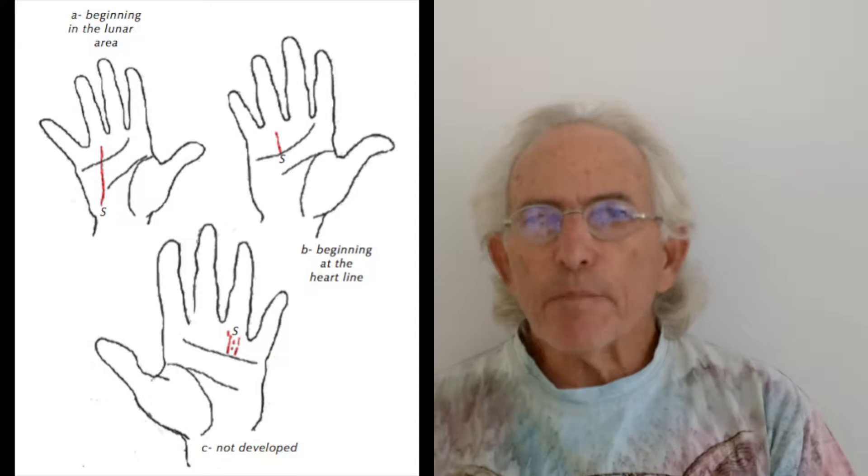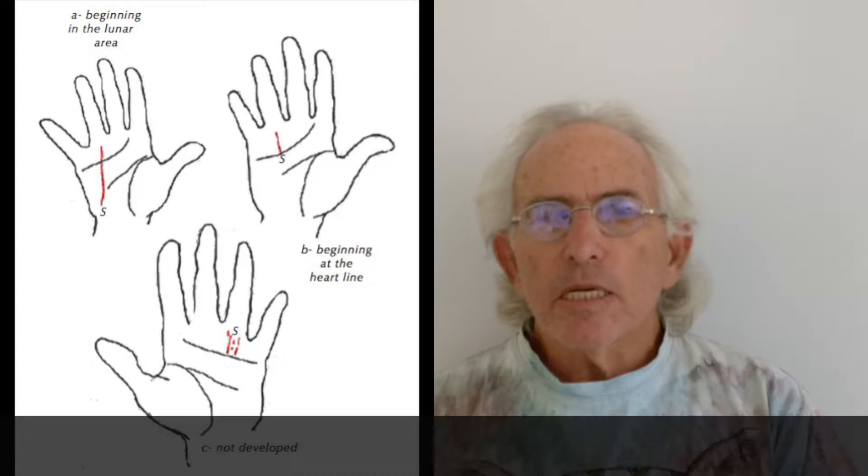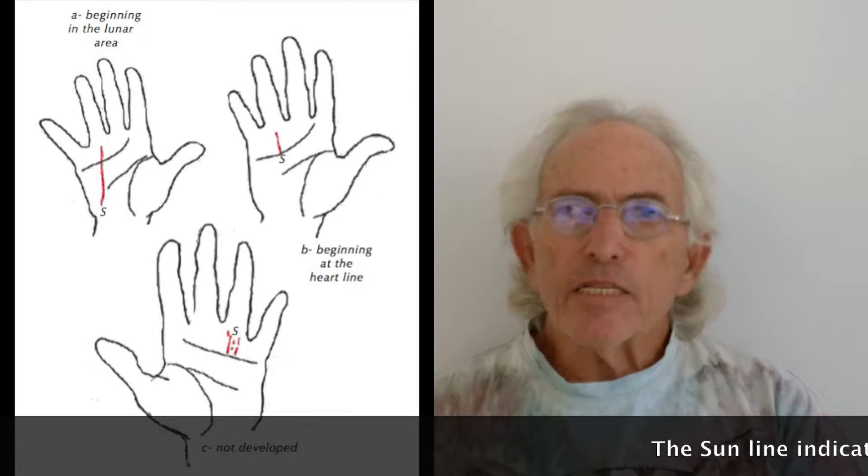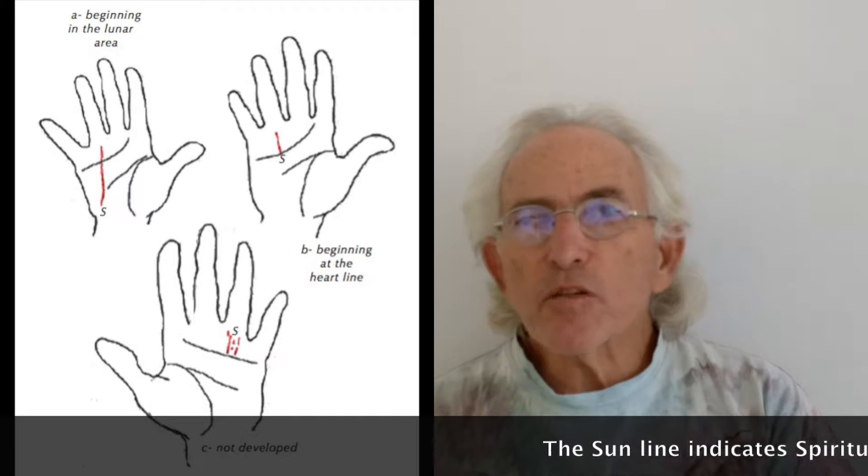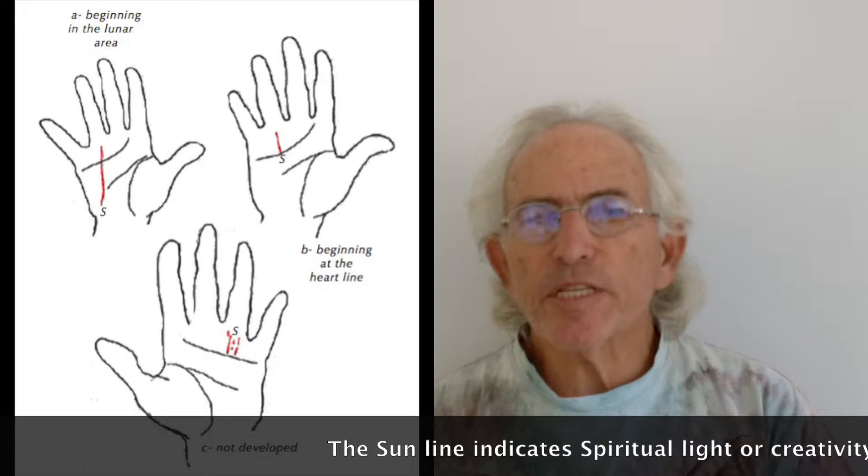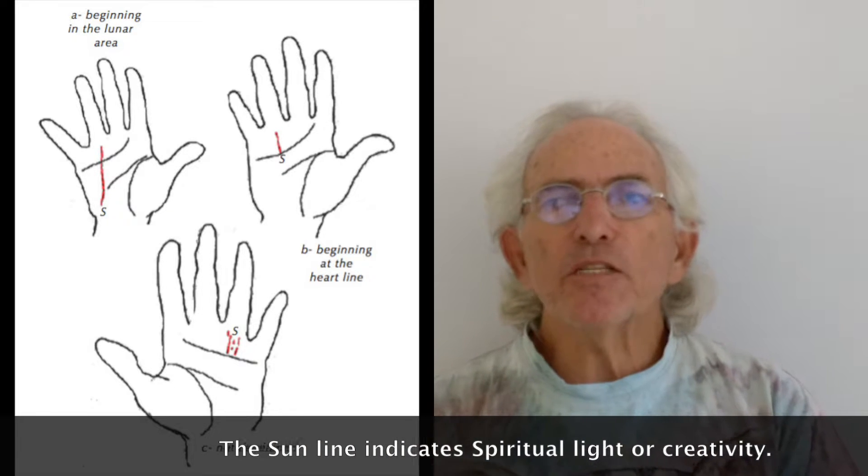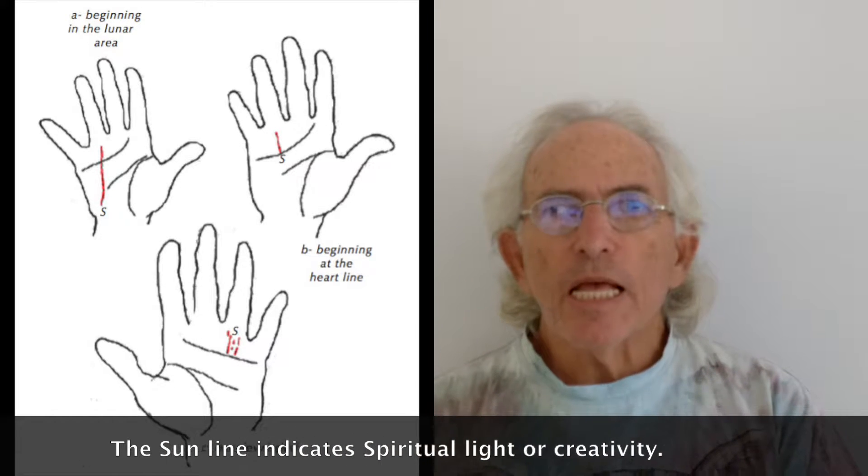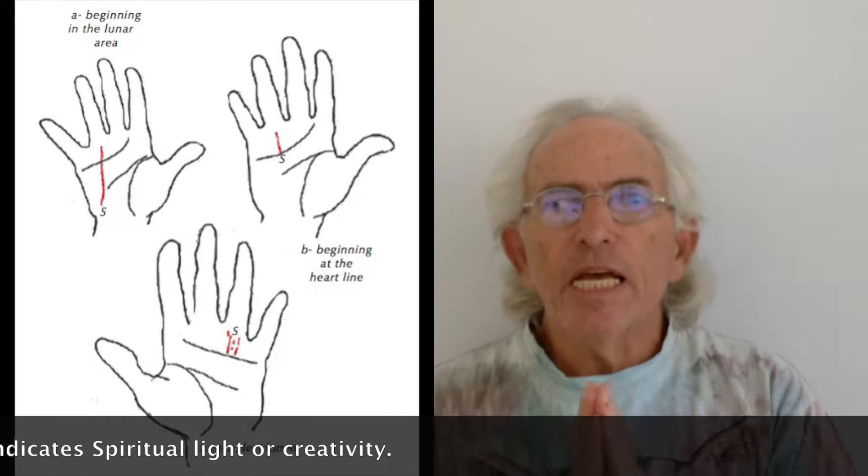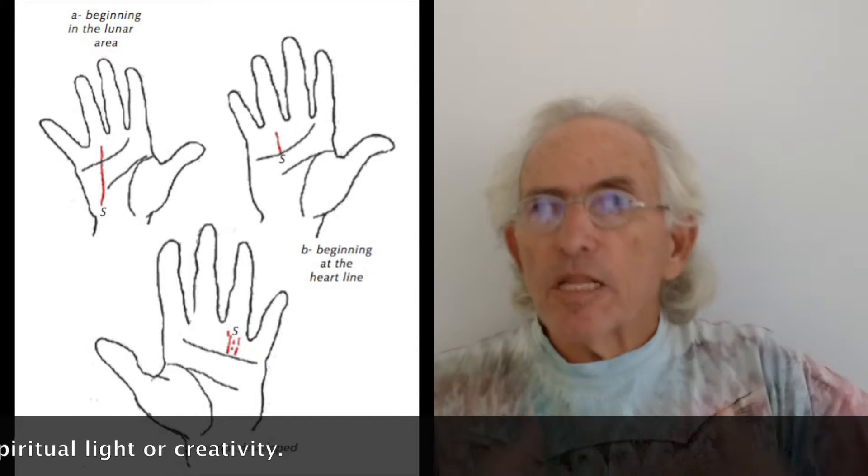They're not as common as a Saturn line, and it's rare to find one that's a full line, like a Saturn line that's a really full straight line that's really going up to the sun. And when you do find one of those, it does mean, because what is the sun about? It's about creativity, it's about light, your light, your spiritual light.